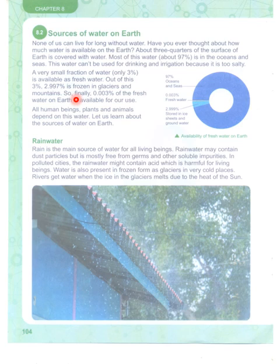So finally, 0.003% of the fresh water on Earth is available for our use. All human beings, plants, and animals depend on this water. Let us learn about the sources of the water on the Earth.